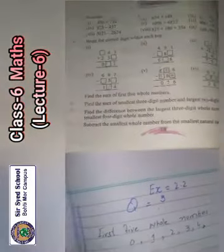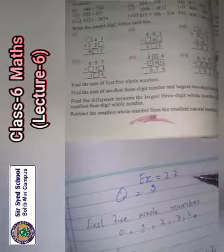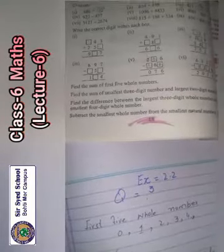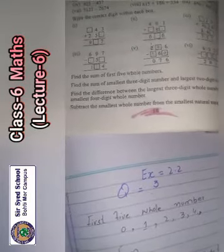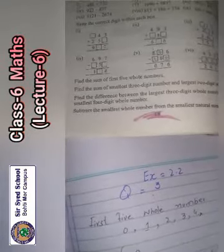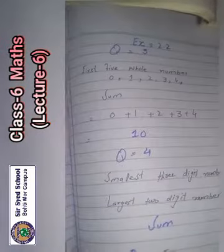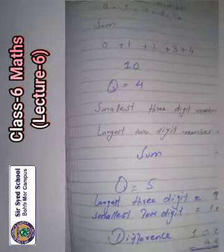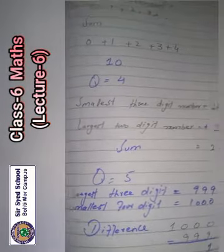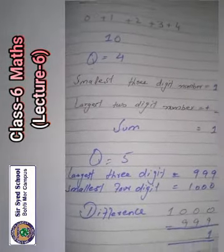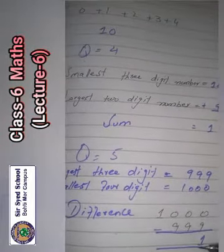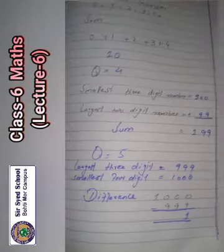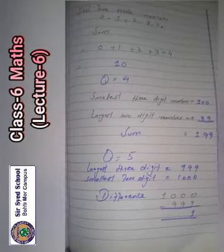Next question number five. Find the difference between the largest three-digit whole number, meaning 999, and smallest four-digit whole number, meaning 1000. Difference means subtract. When you subtract 999 from 1000, the answer you will get is 1. I hope this is clear to you.